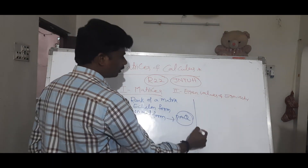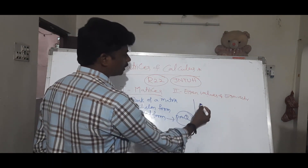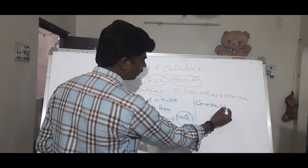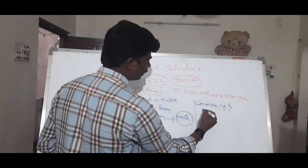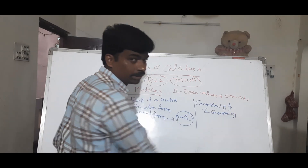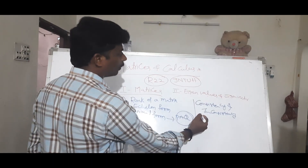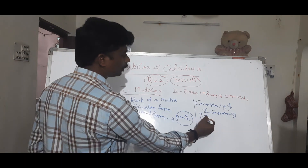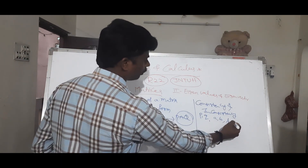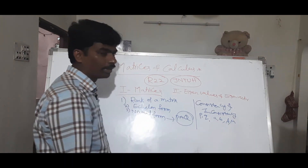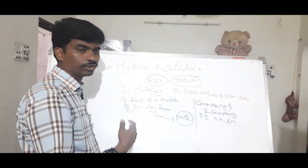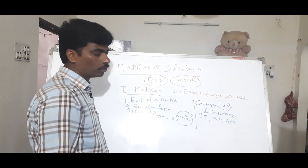The next topic is consistency and inconsistency. Using parameters P, Q, A, B — lambda and mu — we determine: no solution, infinite number of solutions, or unique solution. These are the three methods.